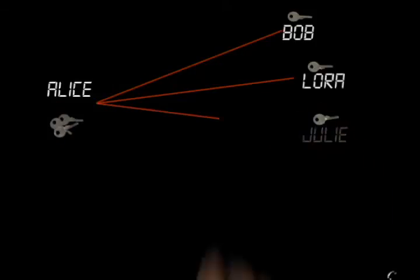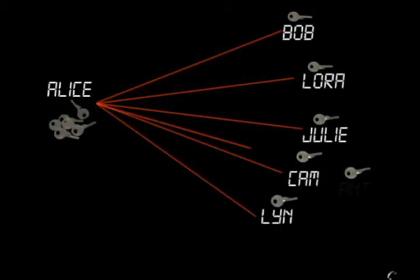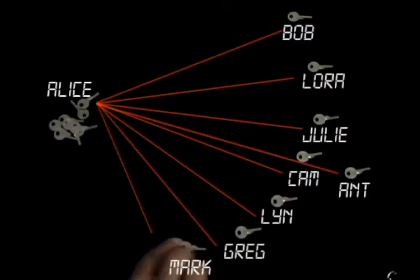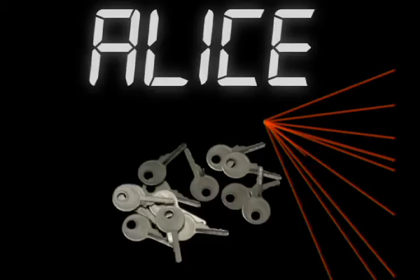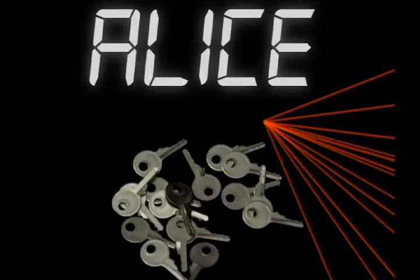Plus, if Alice needs to communicate with multiple people, perhaps she's a bank, then she's going to have to exchange distinct keys with each person. Now she'll have to manage all of these keys and send thousands of messages just to establish them. Could there be a simpler way?